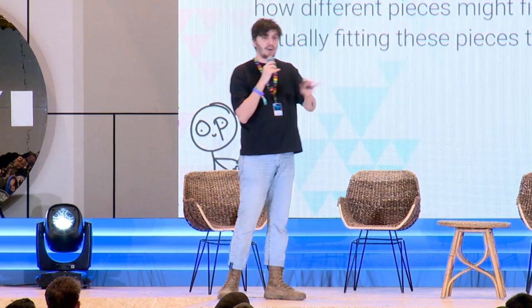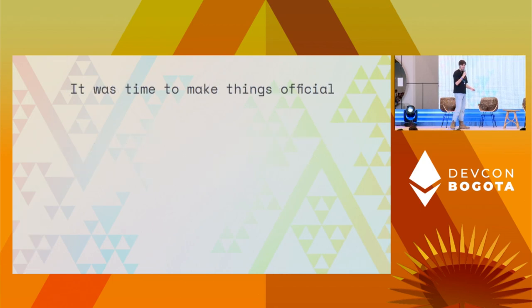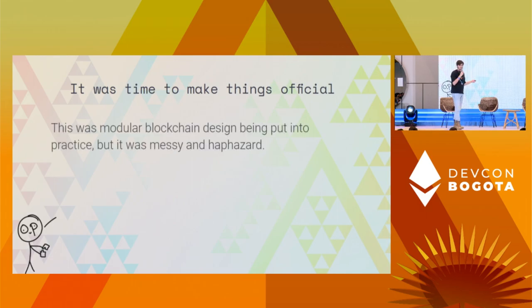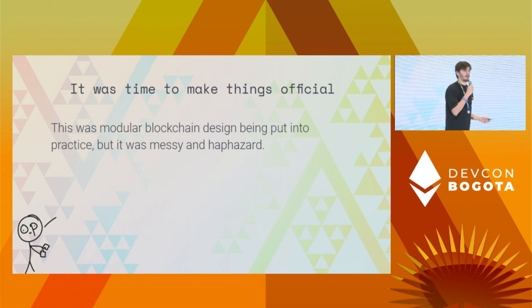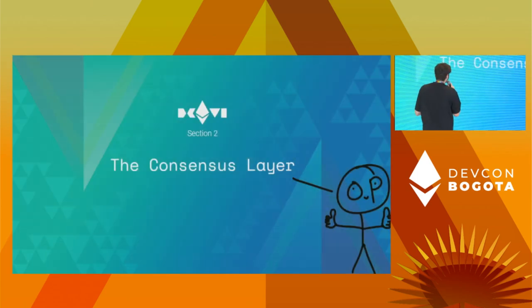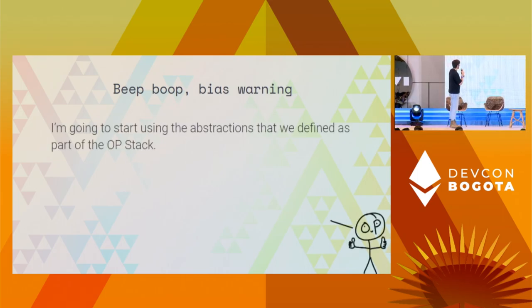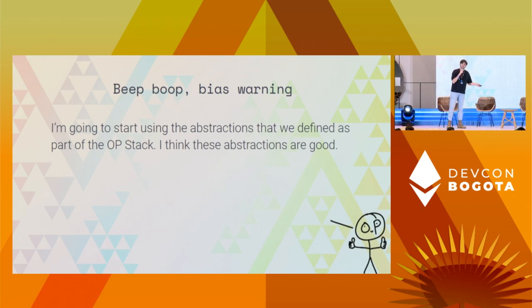It was time to make things official. Modular blockchain design was being put into practice, but the beginning was messy and haphazard — people were ripping things out and tweaking the execution layer without formality. So it's formalization time — loosely formalized because I never graduated college, but good enough. Bias warning: I'm going to use the abstractions we define in the OP stack. I think these abstractions are good — there are others out there, but the OP stack abstractions are pretty good.